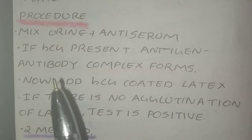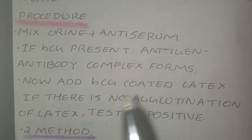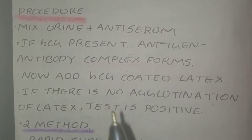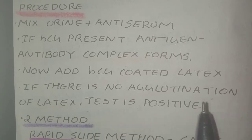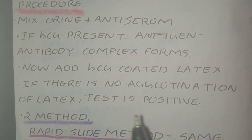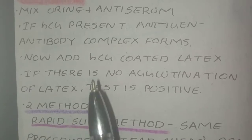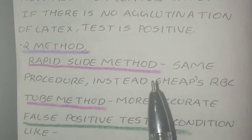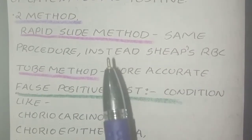For the procedure: first, mix the urine with the anti-serum. If HCG is present in the urine, an antigen-antibody complex forms. Then add the HCG-coated latex particles — if there is no agglutination of the latex, the test is positive. There are two methods: the rapid slide method uses the same procedure but instead of latex particles, sheep RBCs can be used.